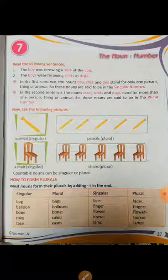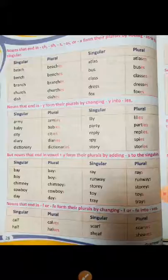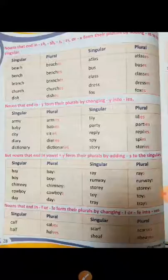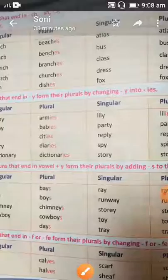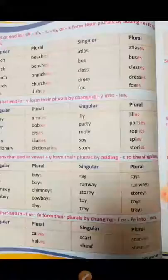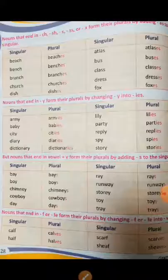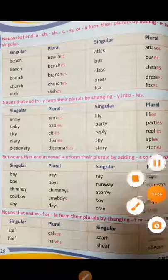Now come to the next page. Nouns that end in CH, SH, S, or SS — if some words end with such sounds, we make plurals by adding -es to the singular. For example, beach becomes beaches, atlas becomes atlases, class becomes classes, and fox becomes foxes.